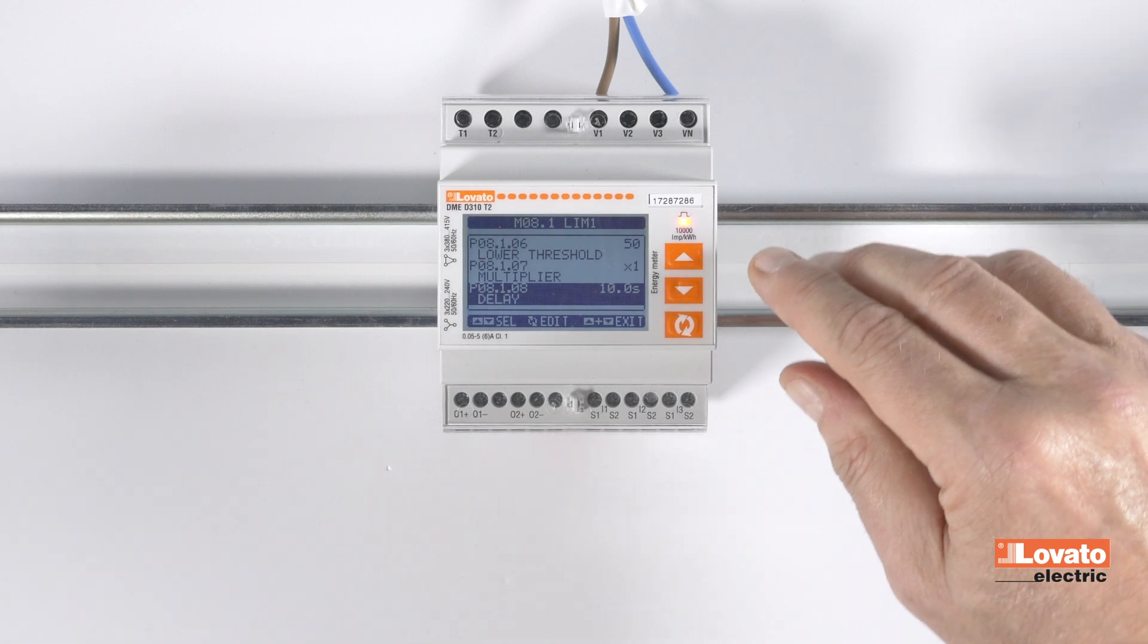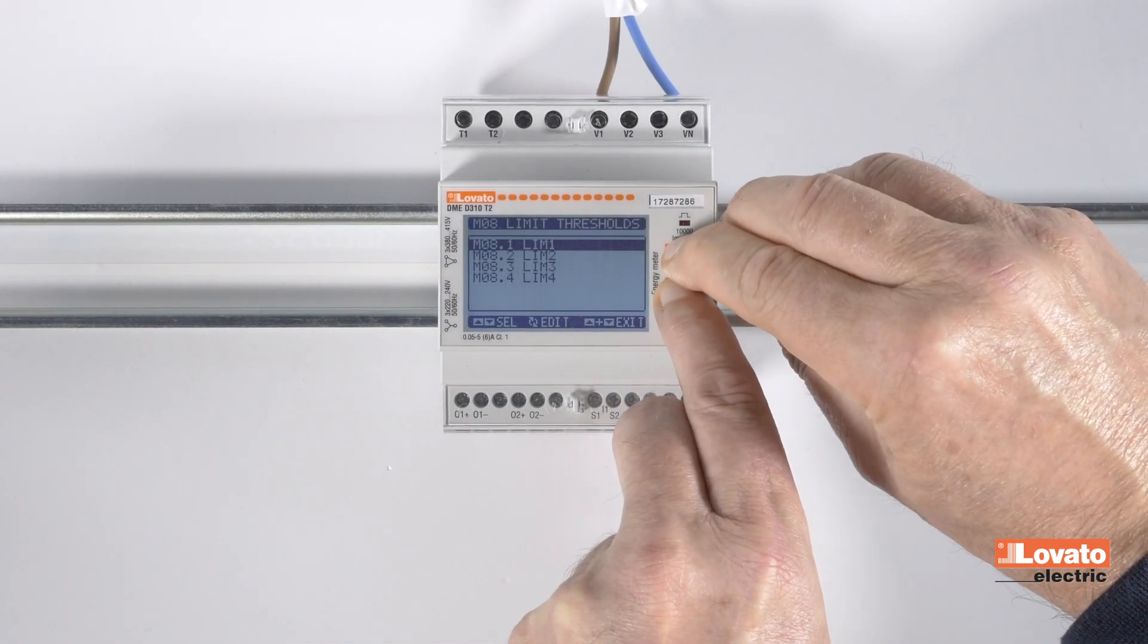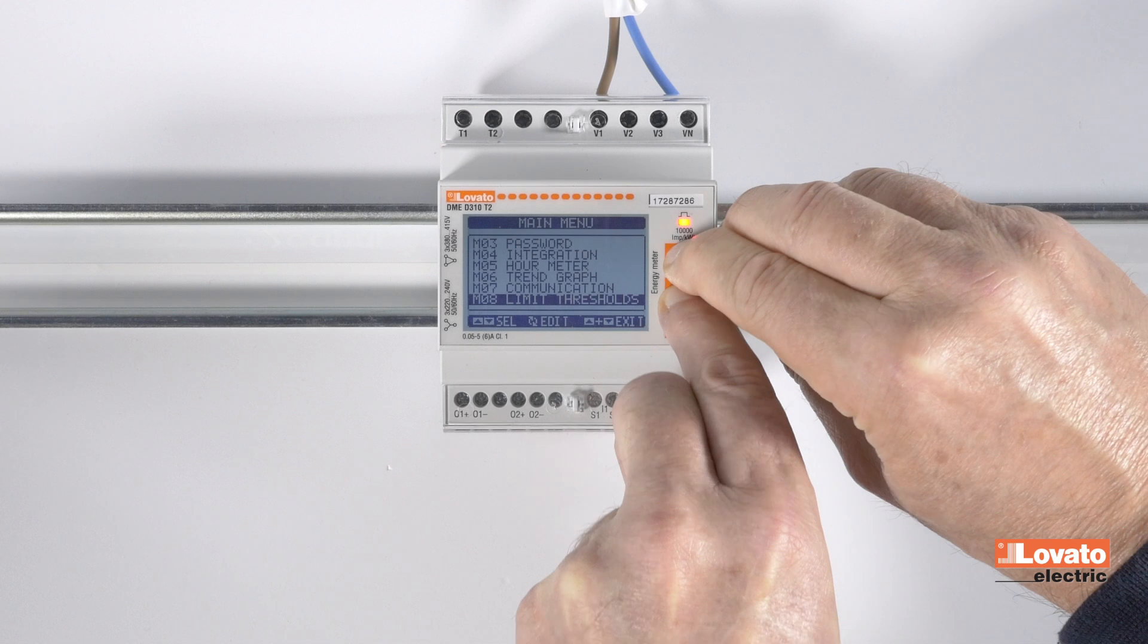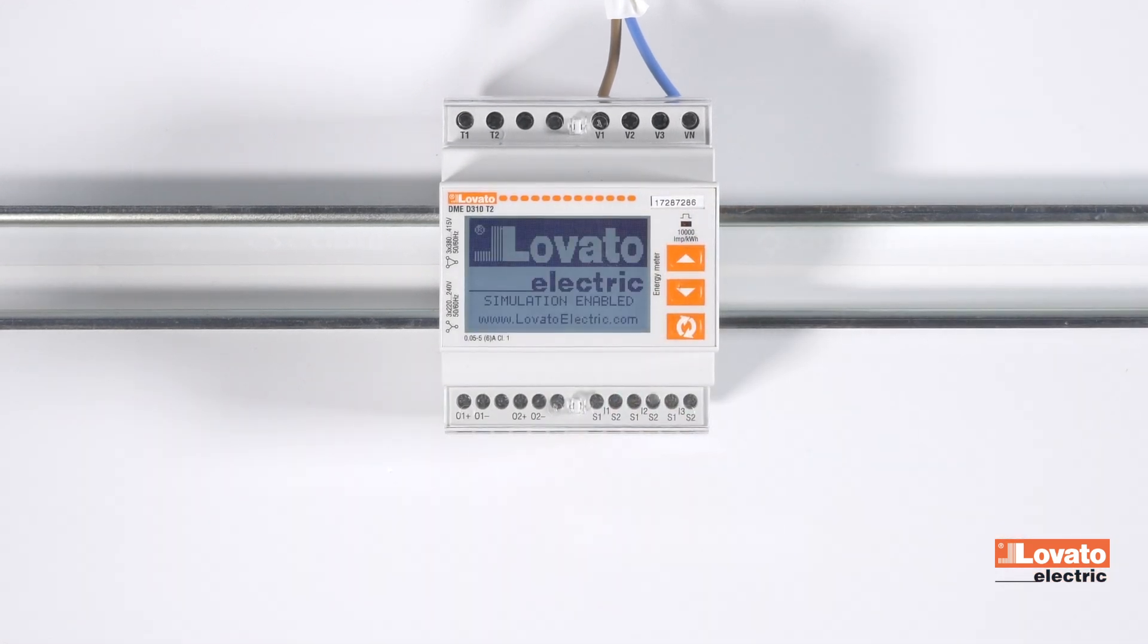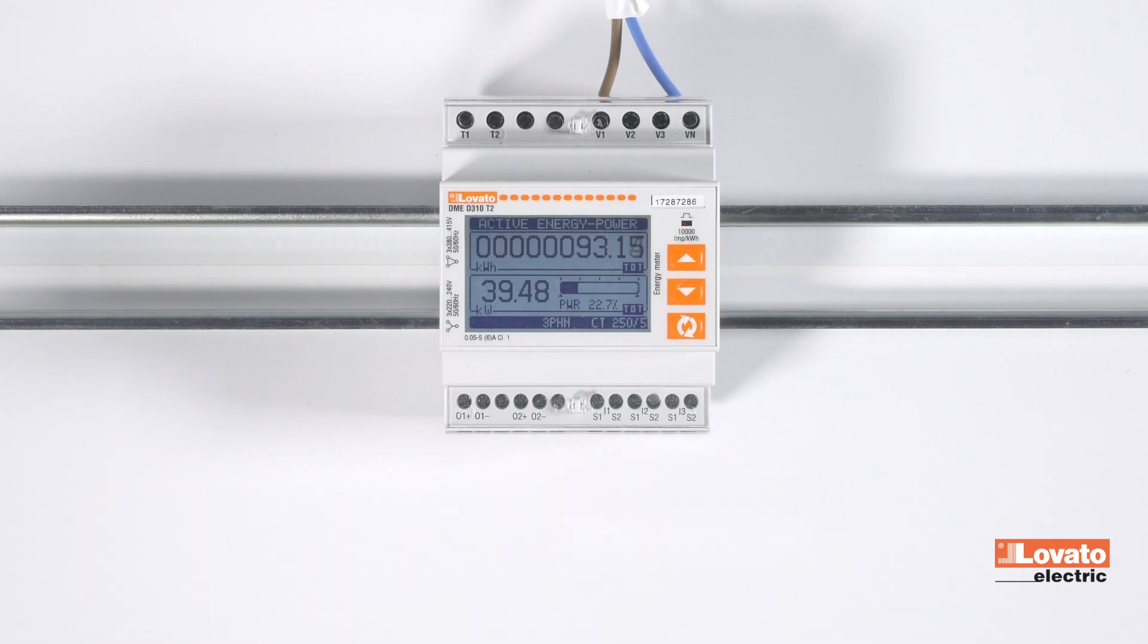Press both the up and down arrows to exit and reboot the meter. This will save our settings.